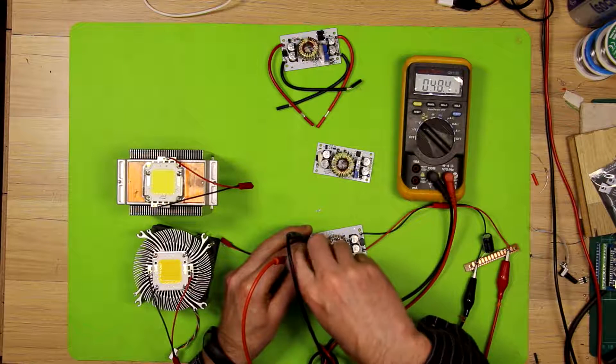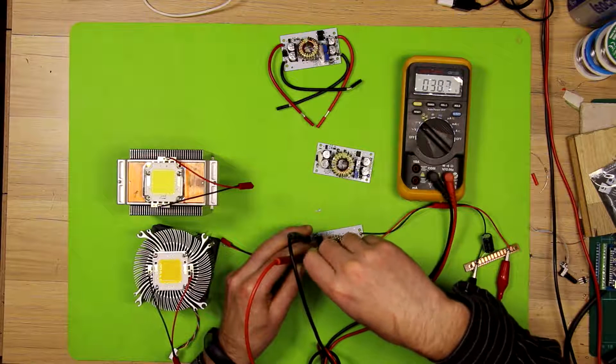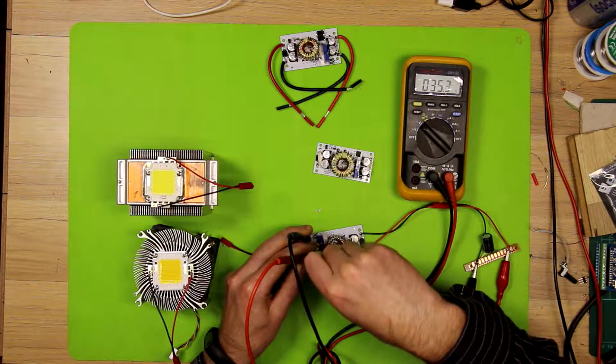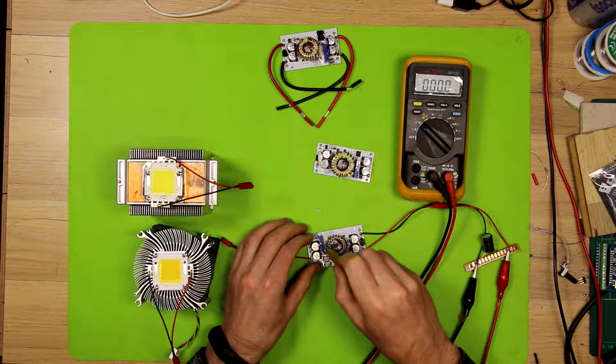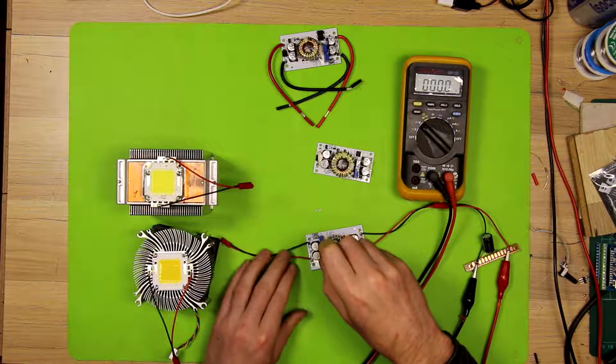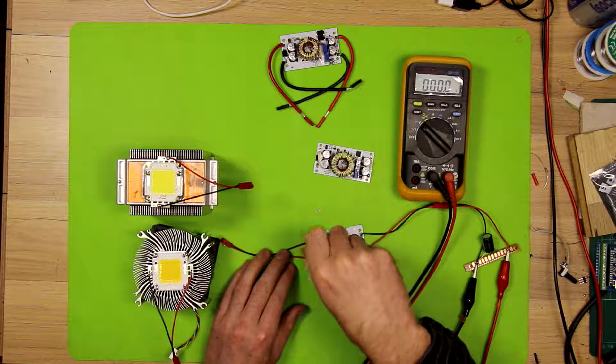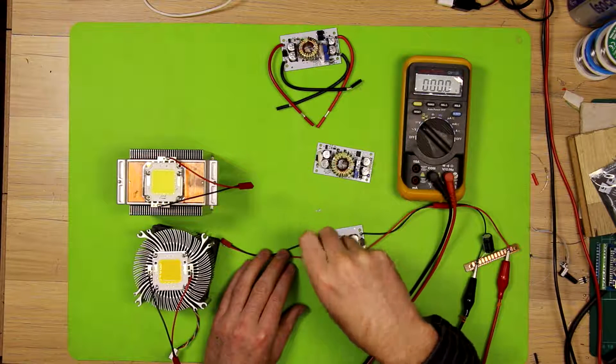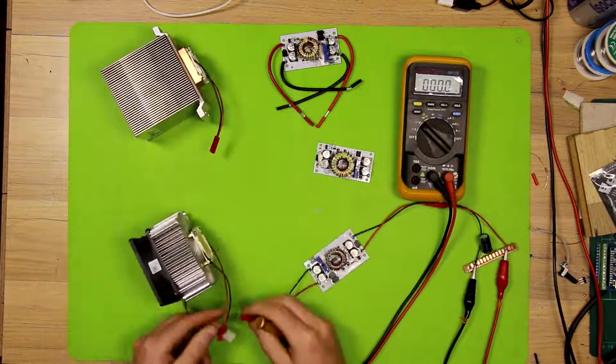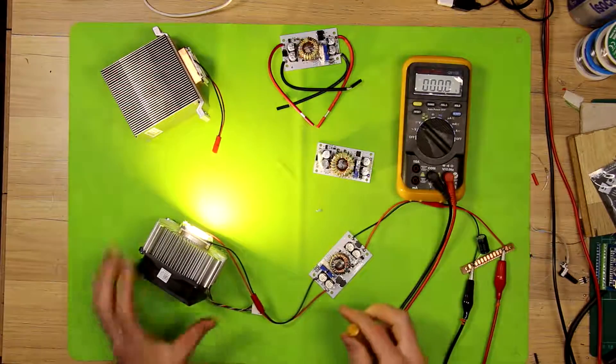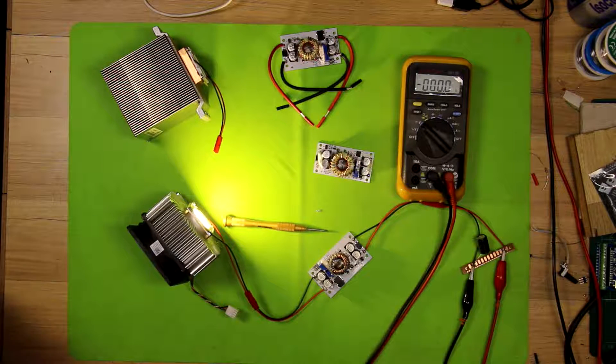So, you want to measure the output. Now that's a problem, I've actually turned it up above the rating of the capacitors here. They're only 50 volt rated capacitors. I would not recommend turning the voltage adjust potentiometer all the way counterclockwise, because you're going to risk blowing up your capacitors.